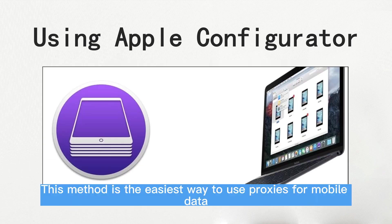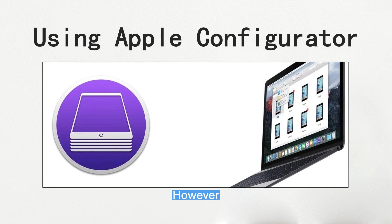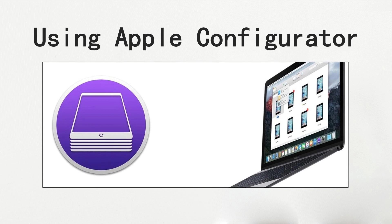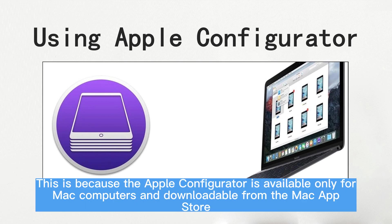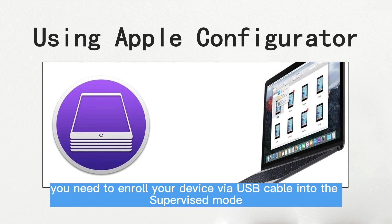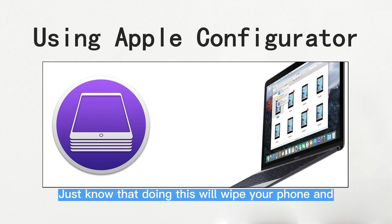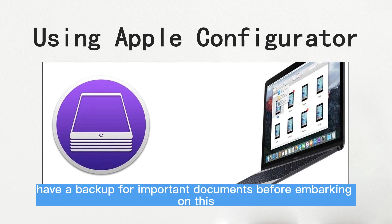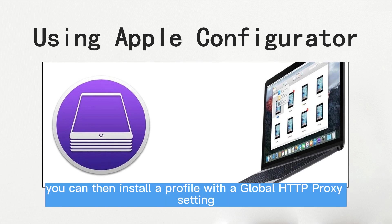There are basically two ways to do this. The first is using Apple Configurator, which is the easiest way to use proxies for mobile data. However, before you are able to use it, you have to have access to a Mac computer, as Apple Configurator is available only for Mac and downloadable from the Mac App Store. To use global HTTP proxy settings, you need to enroll your device via USB cable into supervised mode. Just know that doing this will wipe your phone, so have a backup of important documents before embarking on this. After the enrollment, you can then install a profile with a global HTTP proxy setting.